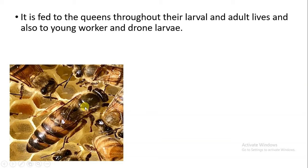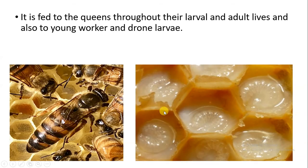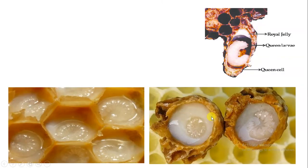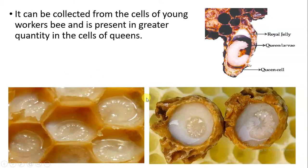Royal jelly is given to the queen throughout from the larval stage up to the adult stage. It is also given to the larval stage of workers and drones, which is about 1 to 3 days. This royal jelly is synthesized during the digestion of pollen and is high in protein content.